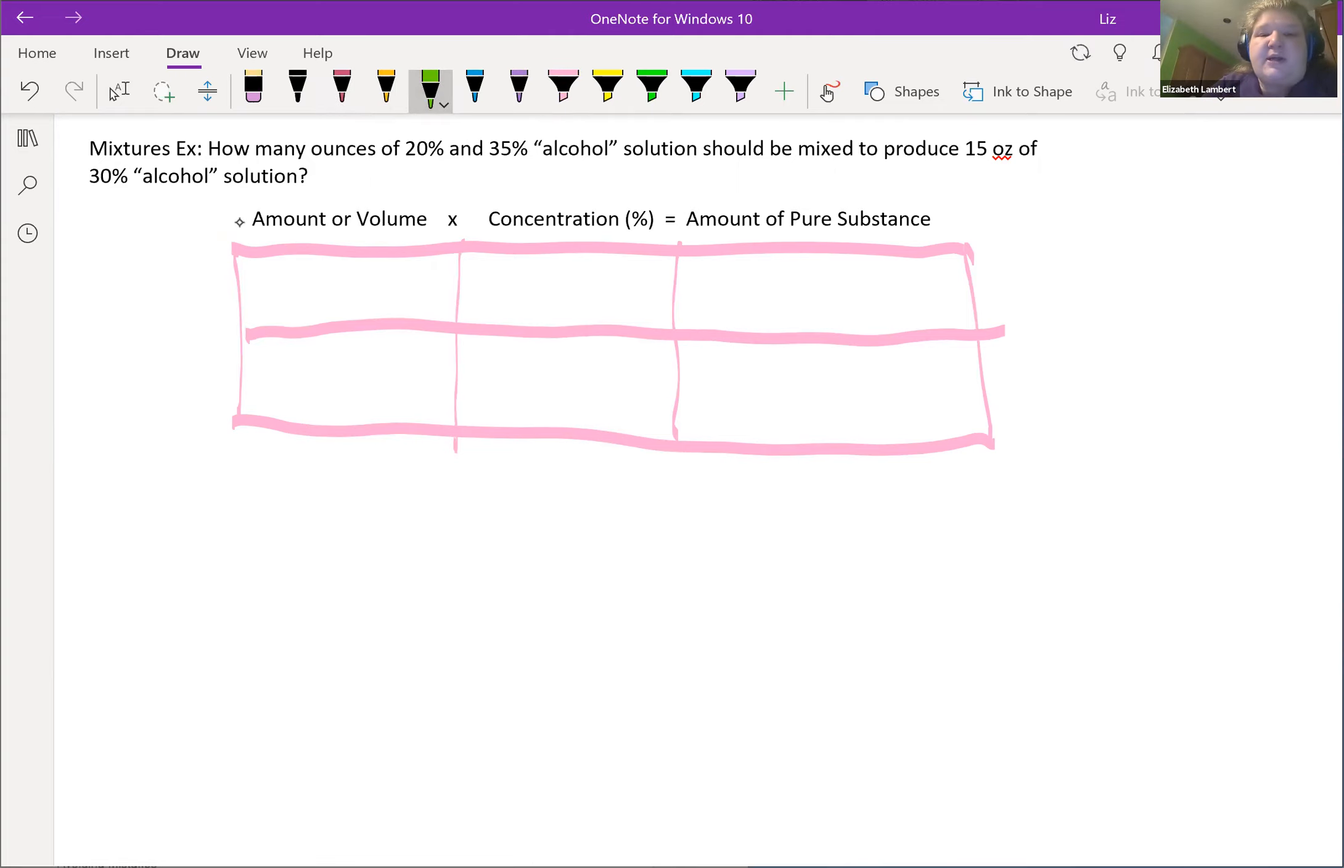Alright, so I do know my two concentrations. I've got 20% and 35%. And then the final amount is I want 15 ounces of 30%.